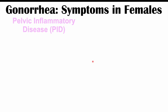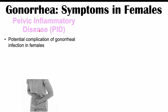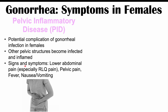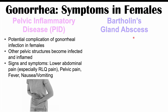Some female patients can progress to more severe complications, including pelvic inflammatory disease (PID), where other pelvic structures become infected and inflamed. Signs and symptoms of PID include lower abdominal pain — especially in the right lower quadrant — pelvic pain, fever, nausea, and vomiting.